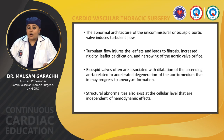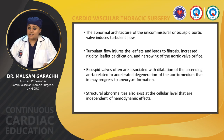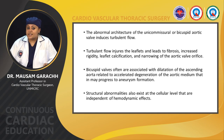The abnormal architecture of the unicommissural or bicuspid aortic valve induces turbulent flow. The turbulent flow injures the leaflet, leading to fibrosis, increased rigidity, leaflet calcification, and narrowing of the aortic valve orifice. Bicuspid valves are often associated with dilatation of the ascending aorta, related to accelerated degeneration of the aortic medium, which may progress to aneurysm formation. Structural abnormalities also exist at the cellular level, independent of hemodynamic effects.